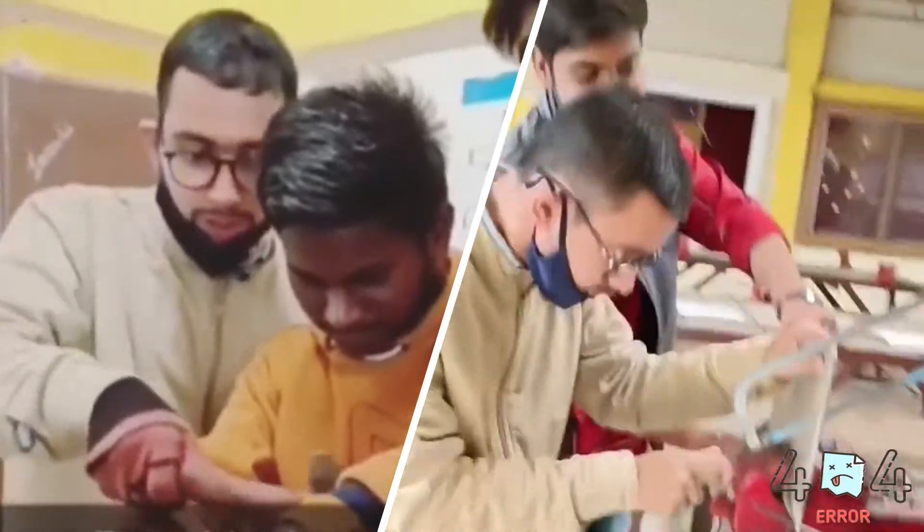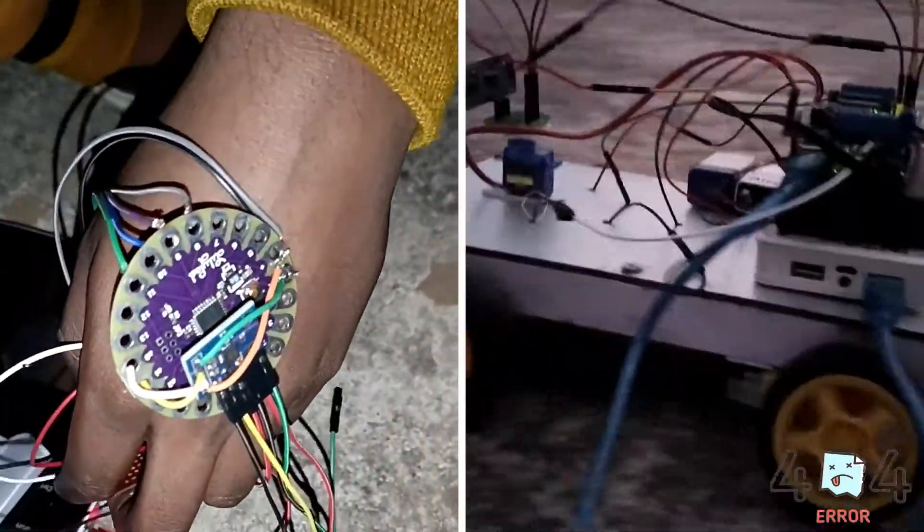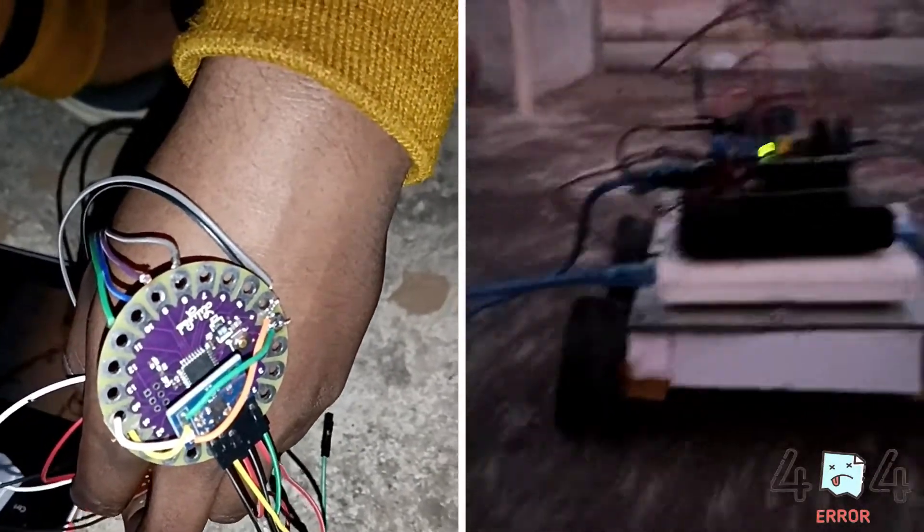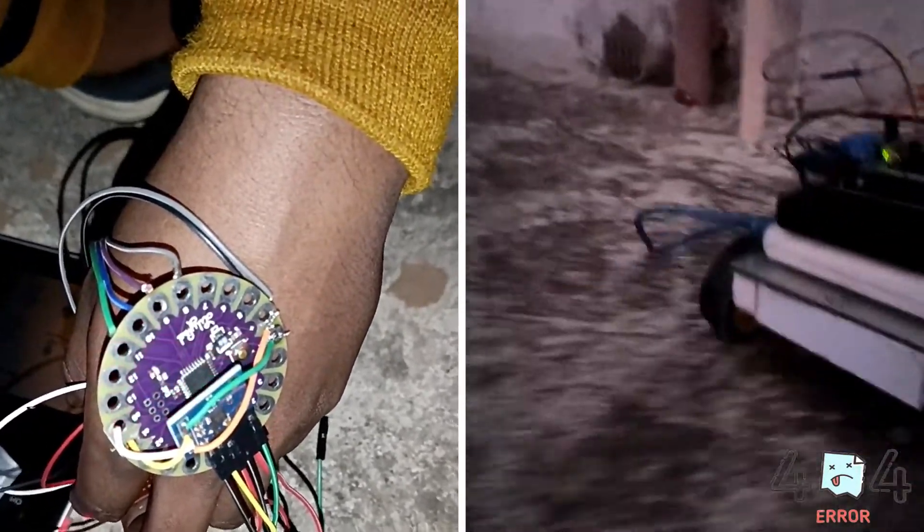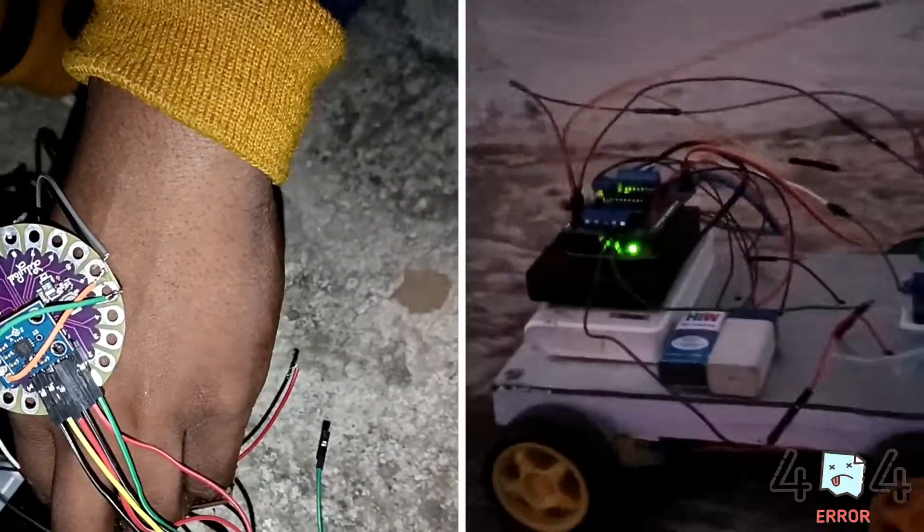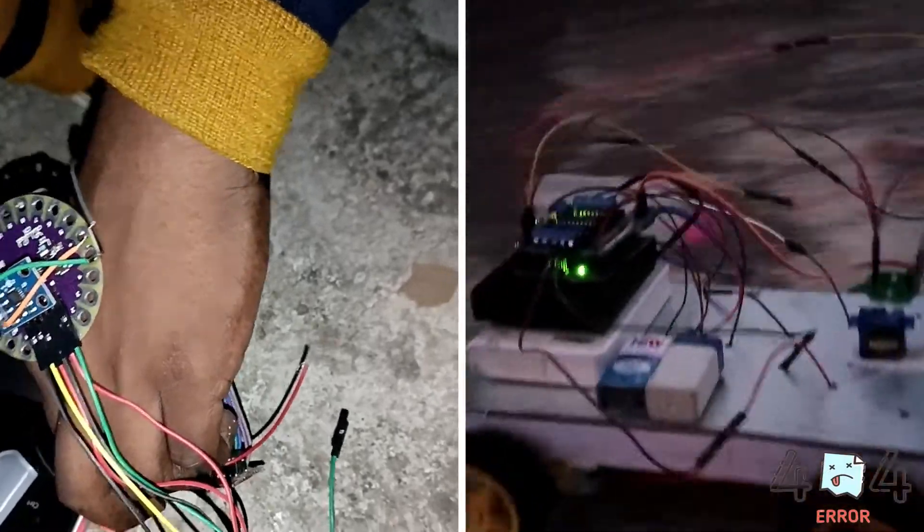The traditional wired button control robot became very bulky and it also limits the distance that the robot goes into. The wireless hand control robot will function by a wearable hand glove from which the movement of the hand can be used as the input for the movement of the robot.